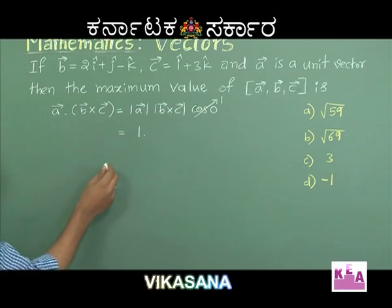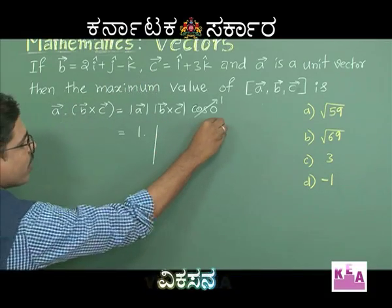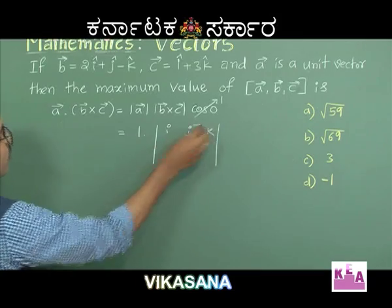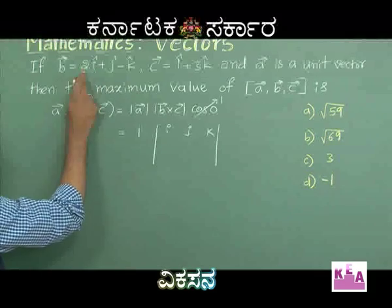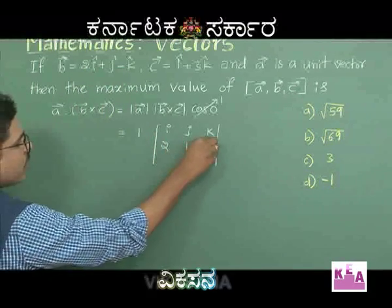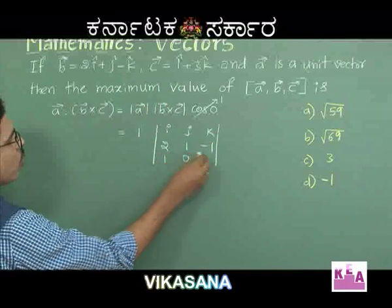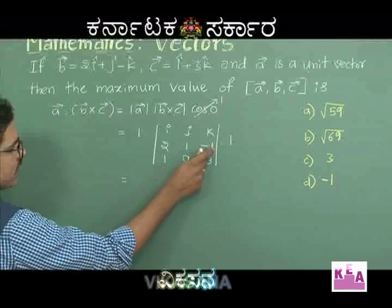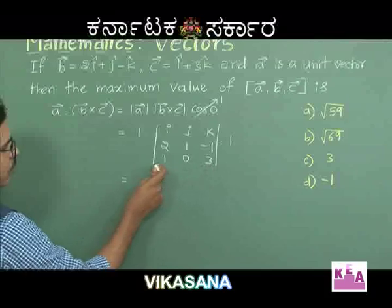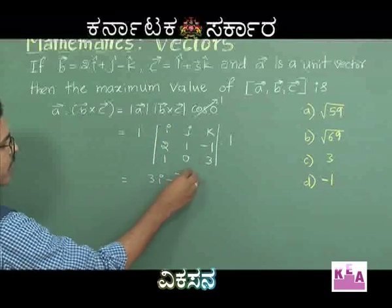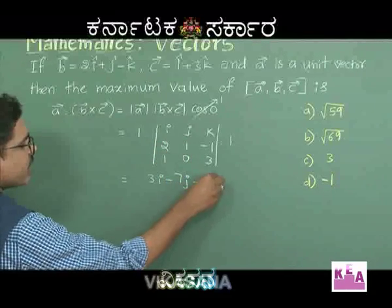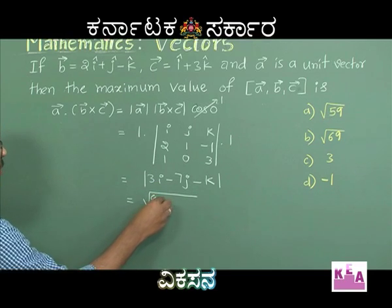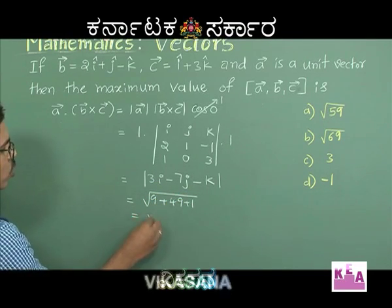Finding B cross C: with B = (2, 1, −1) and C = (1, 0, 3), the cross product gives: i component = (3 − 0) = 3i, j component = −(6 + 1) = −7j, k component = (0 − 1) = −k. The magnitude is √(9 + 49 + 1) = √59.